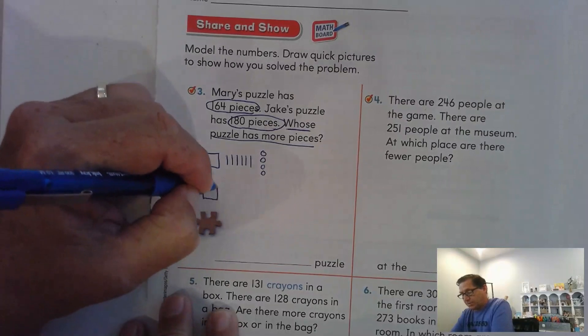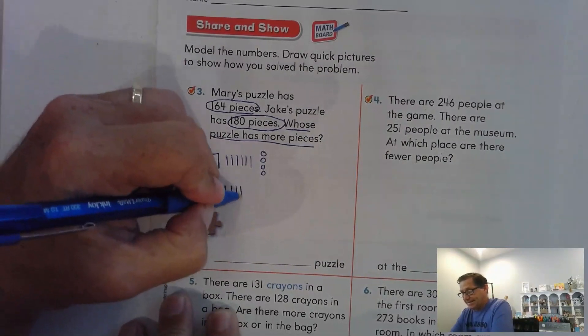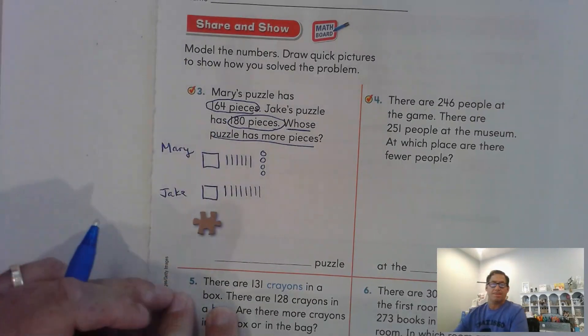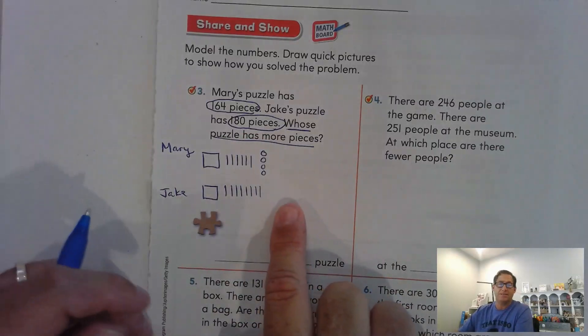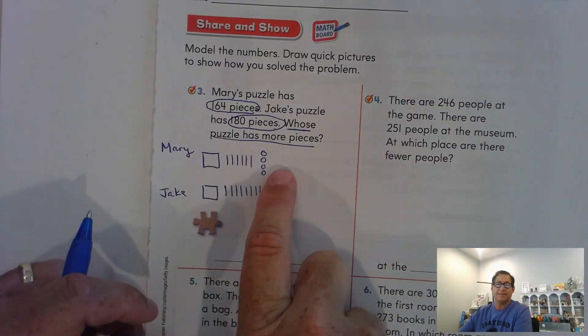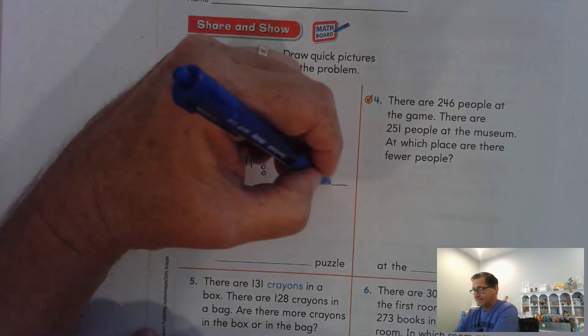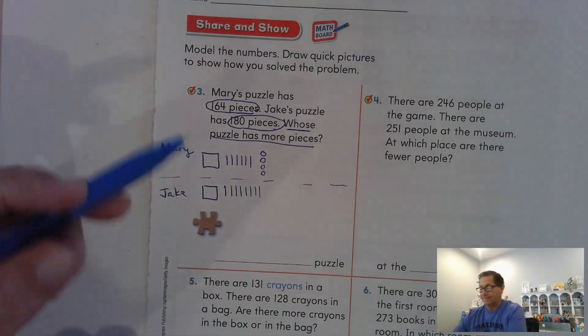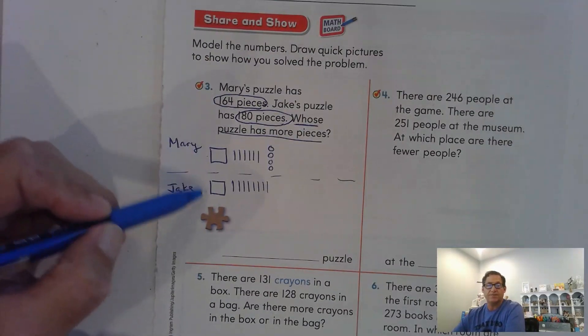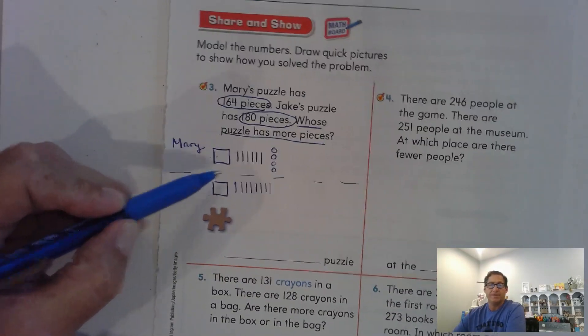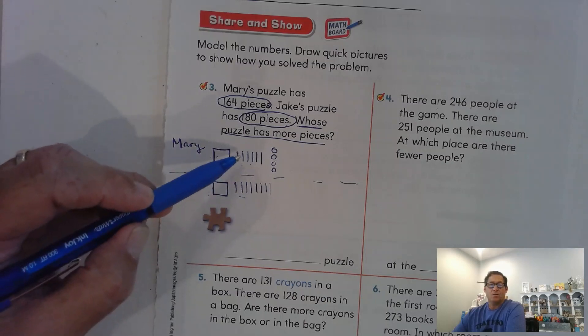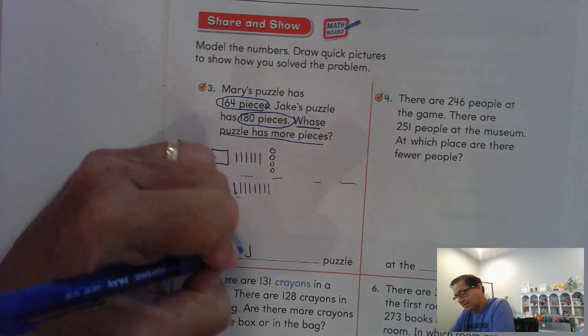Jake also has one 100. He has eight tens. And he doesn't have any ones, so we're not going to write anything next to it. So 180 versus 164. So we're trying to find which one is the greatest or which one has more pieces. So let's start with 100 because that's the greatest value. The same, so it doesn't help me. So I have to go to the next greatest value, 60 and 80. Six tens is less than eight tens. So Jake's puzzle has more pieces.